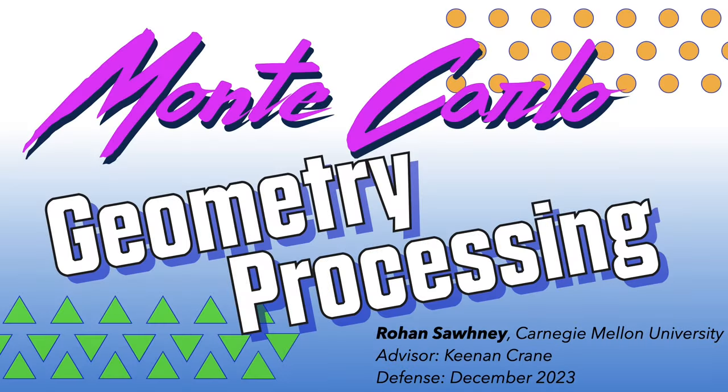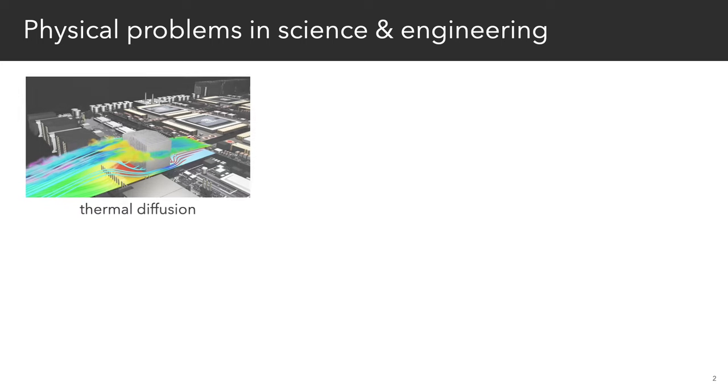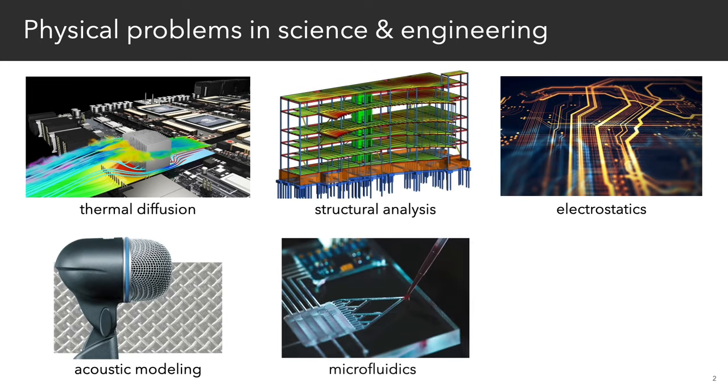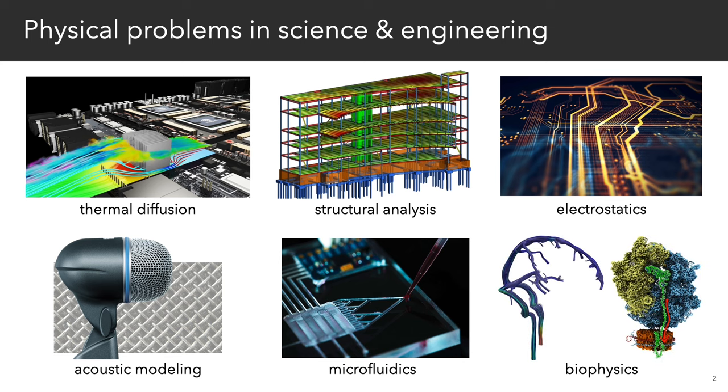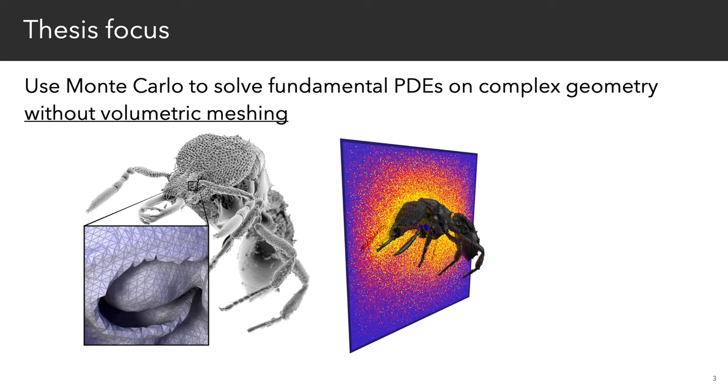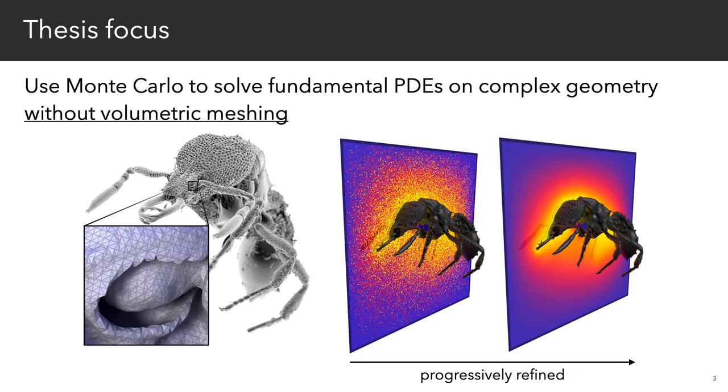Hi, my name is Rohan Sahani. I'm a PhD student at Carnegie Mellon, advised by Keenan Crane. And my thesis is titled, Monte Carlo Geometry Processing. So numerous physical phenomena in science and engineering, such as thermal diffusion, structure mechanics, and electrostatics, are described by certain basic yet fundamental partial differential equations like the Poisson equation. My thesis explores how we can solve such equations using the Monte Carlo method in domains with extremely complex geometry, without needing any volumetric meshing.